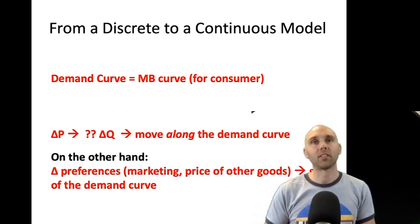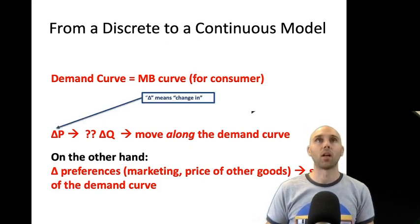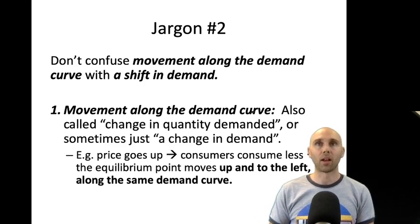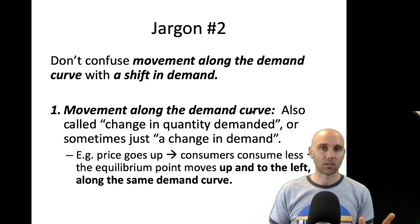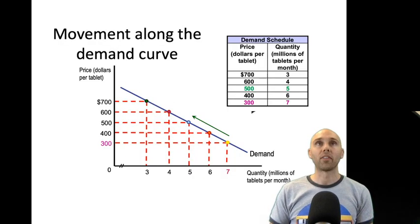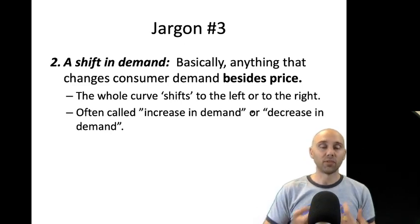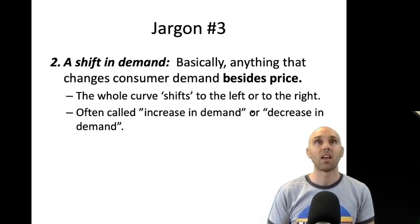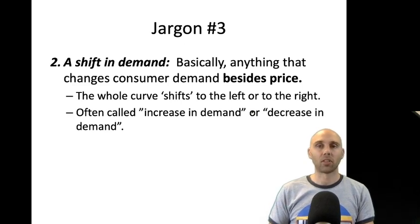We're also very interested in things that shift the curve — draw new curves — just as we were interested in this for supply. We don't want to confuse movement along the demand curve with a shift in demand. Movement along the demand curve represents the effect on quantity when just the price has changed. A shift in demand is where we actually draw a new curve — move it out to the right or in to the left. That's anything besides price that can change consumer demand. We talk about an increase in demand (shift to the right) or a decrease in demand (shift to the left).